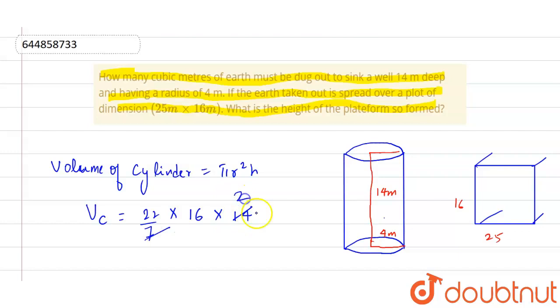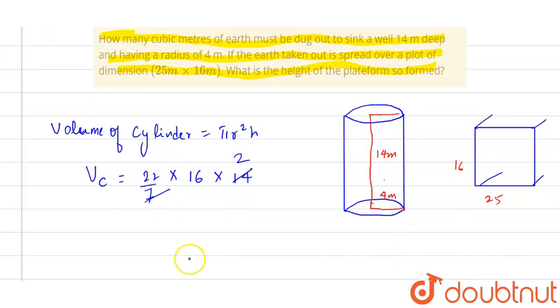That is 4 squared, which is 16, multiply by h which is 14 meter. This 7 cancels with 14 by 2, we get volume of cylinder equals 44 multiply by 16 meter cube.